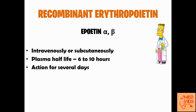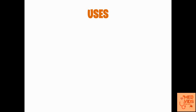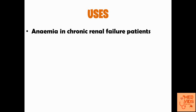One of the most common indications for epoietin is anemia in chronic renal failure patients. Because erythropoietin is secreted by the kidneys, in renal failure patients erythropoietin synthesis cannot take place normally. The reason for anemia in those patients is erythropoietin deficiency rather than iron deficiency, B12 deficiency, or folic acid deficiency — though iron deficiency and folic acid deficiency may also be present along with erythropoietin deficiency.